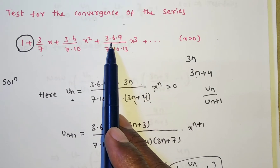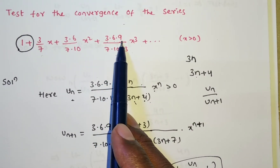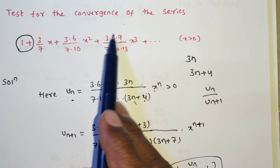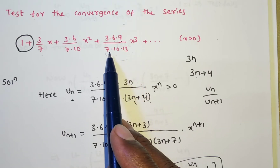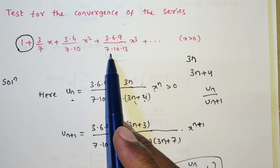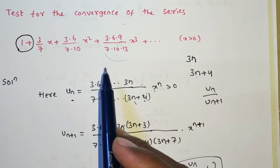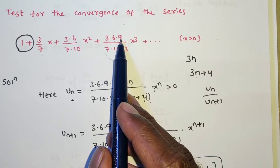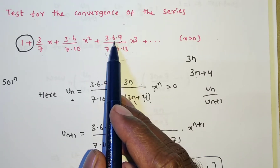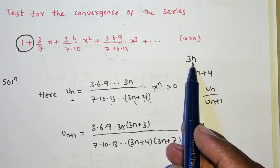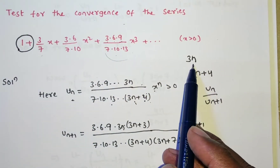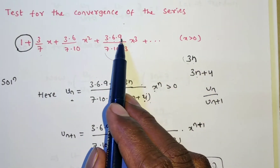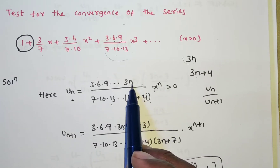From the last term, we have 3·6·9 in the numerator. We need to write the nth term. The third term contains a product of 3 terms, so the nth term contains a product of n terms. This is a repeated series form. For the numerator, the terms are 3, 6, 9 with common difference 3. So write 3n. Putting n=1 gives 3, n=2 gives 6, n=3 gives 9. Satisfied. So the nth term numerator is 3n.